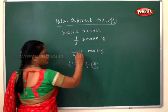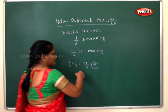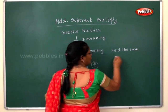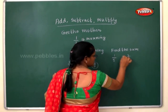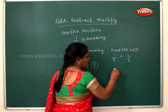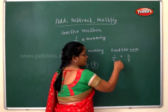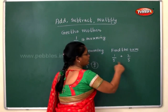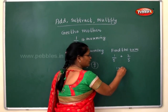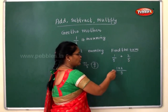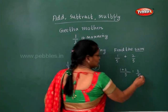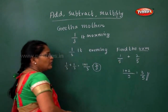Now I will teach you: find the sum of 1/5 and 2/5. Sum means it is plus — always, sum means plus. This is a like fraction, so the denominator is common. Immediately write 5 as the denominator. Then add the numerators alone: 1 plus 2 equals 3. So the answer is 3/5. This is how you find the sum of like fractions.